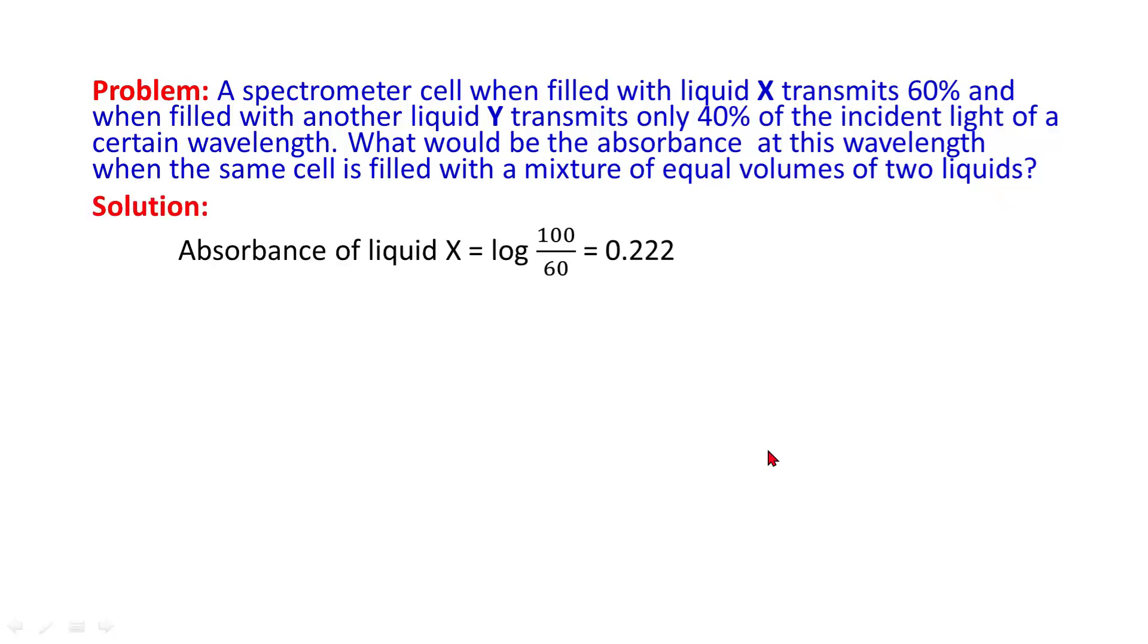Solution: absorbance of liquid X is equal to log of 100 by 60. It transmits 60% which comes out to be 0.222. Similarly, we can find absorbance of liquid Y which transmits only 40% of the incident light which comes out to be 0.398.